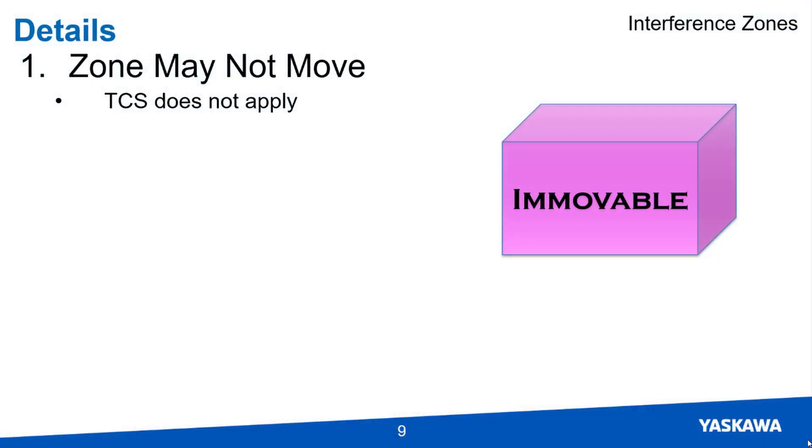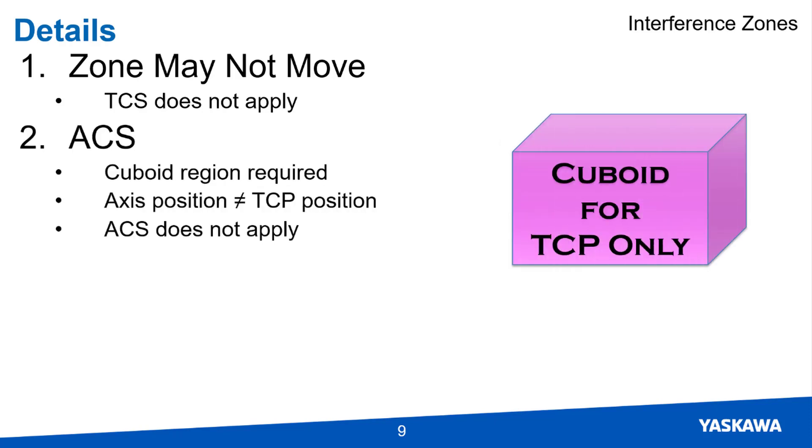Now a few details regarding interference zones and the MP IEC controller. First, a zone may not move with the tool or along with part of the mechanism. For this reason, the zone cannot be defined in the tool coordinate system.